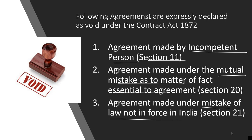Number one: agreement made by an incompetent person. Who is an incompetent person? We have already seen this under capacity of parties. Persons who are incompetent include those of unsound mind, those who are underage, and those expressly declared as not qualified to enter into a contract. These are dealt with in detail under capacity of parties.